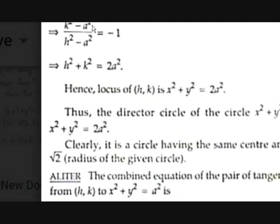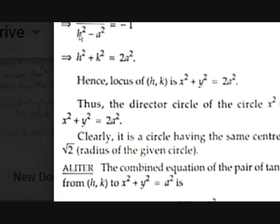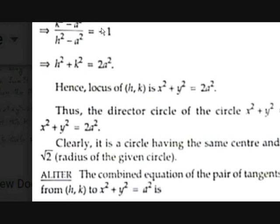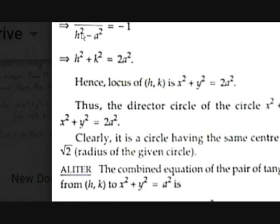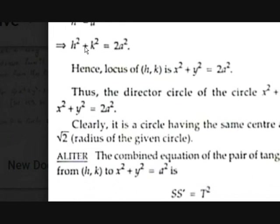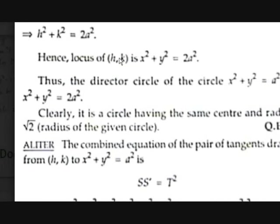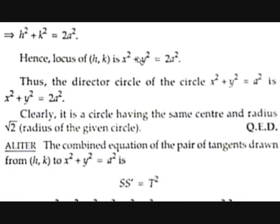From m1·m2 = −1: k²−a² = −(h²−a²), which gives k²−a² = a²−h², so h²+k² = 2a². This is the locus of (h, k), so replacing h and k with x and y gives x²+y² = 2a².